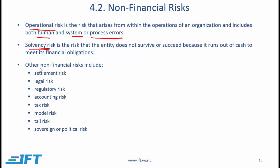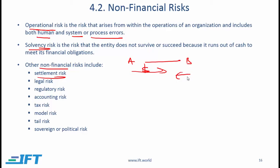Settlement risk is related to default risk. If two parties enter a forward contract and at the end of the contract party A needs to make a payment while party B needs to deliver a bond, but A makes the payment and B files for bankruptcy without delivering the bond, then A must go through a legal procedure to recover it. This might never happen or might be considerably delayed. The risk of the settlement not taking place as expected is called settlement risk.